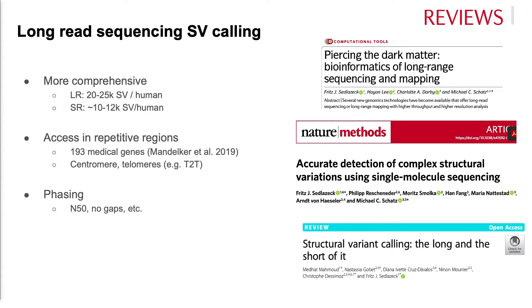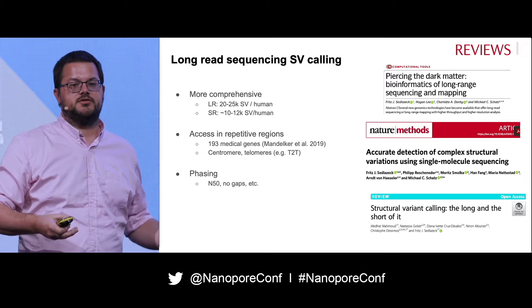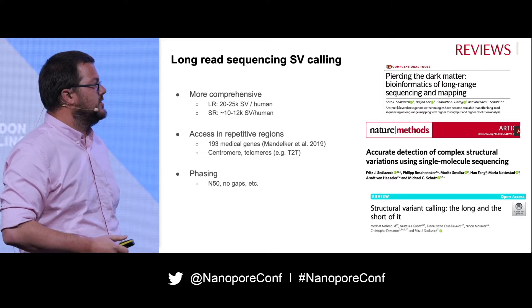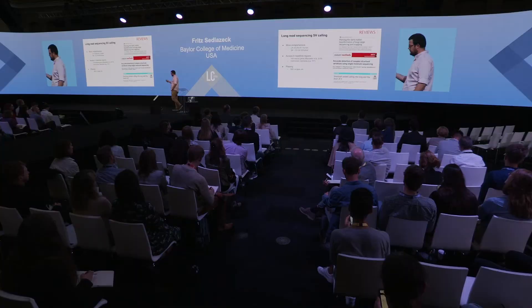Long reads also allow us access to repetitive regions, some of which are really medically relevant, as Mendekler showed. It's also going to be really interesting for future applications to investigate centromeres and telomeres and the variations that we have so far been blind to. One point that is often a little bit ignored is the really important part of phasing, where we can identify if two alleles are co-occurring on the same molecule, which has great implications for expression, for example.